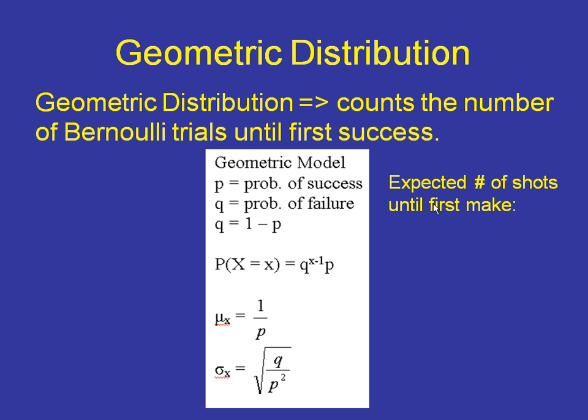Let's find the number of shots we expected this person to take before they make their first one. It would be one divided by P. Their probability of success was 0.3, remember? So, one divided by 0.3 is 3.33 shots. That's how many shots we would expect them to take before they make their first one in the long run. Of course, sometimes they'll make it on their first try, their third try, their seventh try, but the mean is there.